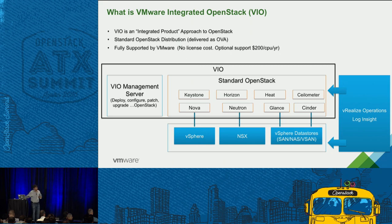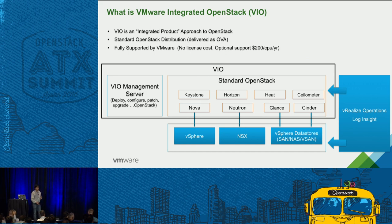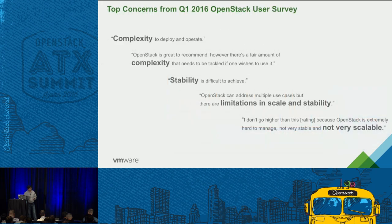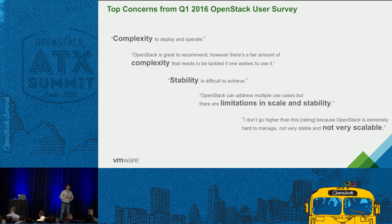VIO is fully supported by VMware. Anything that breaks — Nova, security issues on the OS, underlying vSphere, NSX — we take the call, deliver the fix, and you get the hot patch. VIO has a built-in patching mechanism along with revert, so you don't have to maintain a manual notebook of steps. If it doesn't work, there's a revert command that restarts the services. This is what operators need to run a cloud.